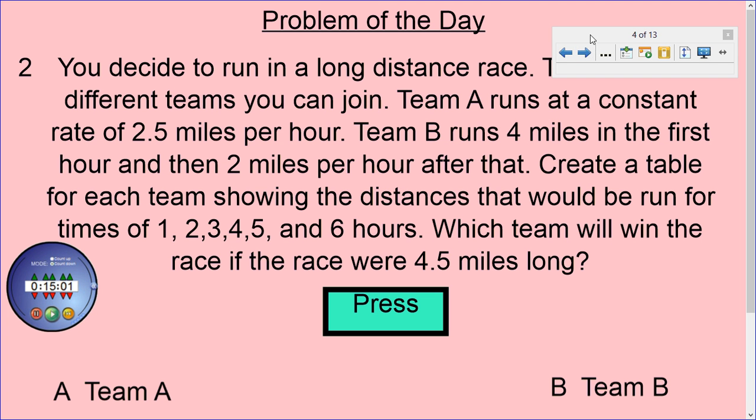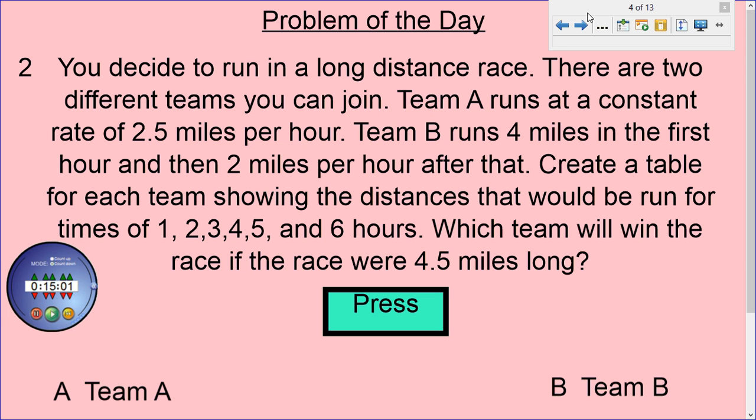So here's an interesting question. You decide to run a long-distance race. There are two different teams you can join. Team A runs at a constant rate of 2.5 miles per hour. Team B runs four miles in the first hour and then two miles per hour after that. Create a table for each team showing the distances that would be run for times of 1, 2, 3, 4, 5, and 6 hours. Which team will win the race if the race were 4.5 miles long? So we're expected to create a table. So let's get to it.